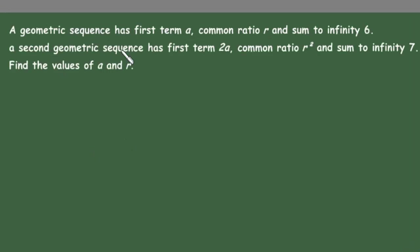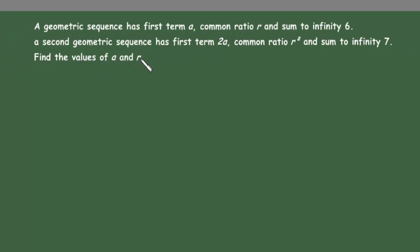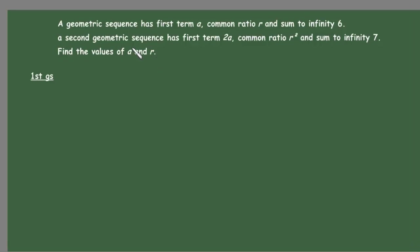In this video we have two geometric sequences. The first one has first term a, common ratio r, and its sum to infinity is 6. The second one has first term 2a, common ratio r squared, and its sum to infinity is 7. We want to find the values of a and r.